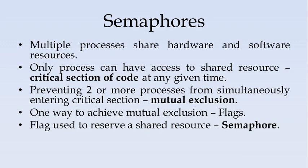We have something called semaphores. The reason to have semaphores is: if you have multiple processes, they will share hardware and software resources. If only one process can have access to a shared resource, then that we call the critical section of code. If there is a shared resource and two processes simultaneously access it, there might be a problem. To avoid multiple processes updating simultaneously, we have something called mutual exclusion. It prevents two or more processes from simultaneously entering the critical section. Only one process can have exclusive access. One way to achieve mutual exclusion is flags. Flags used to reserve a shared resource are called semaphores.